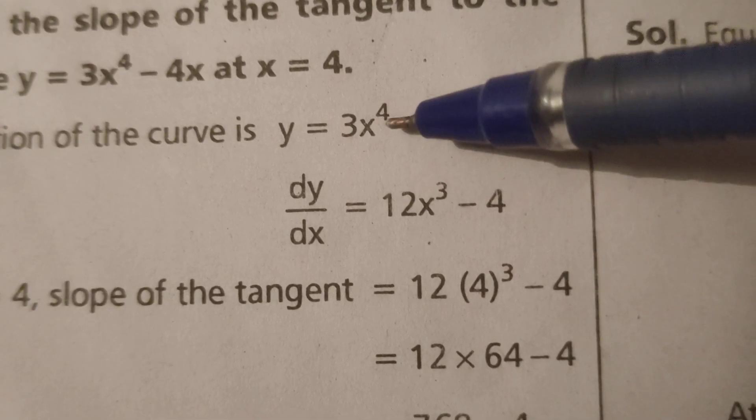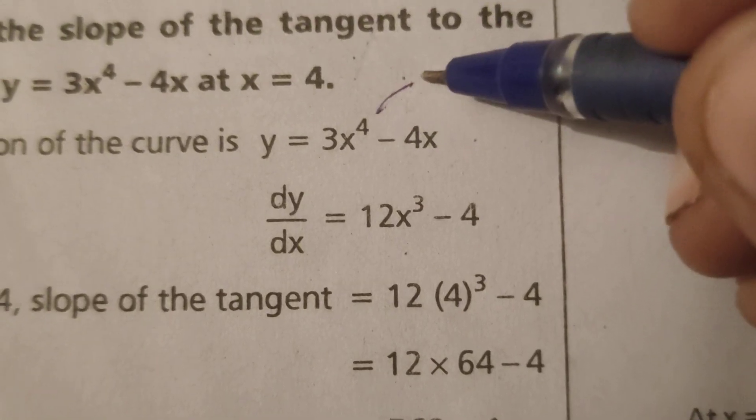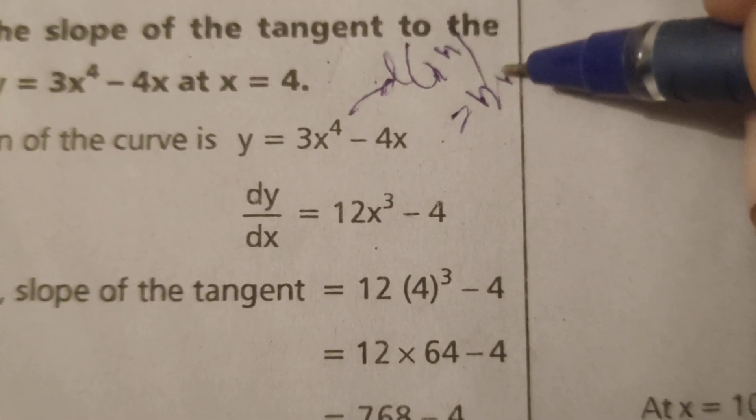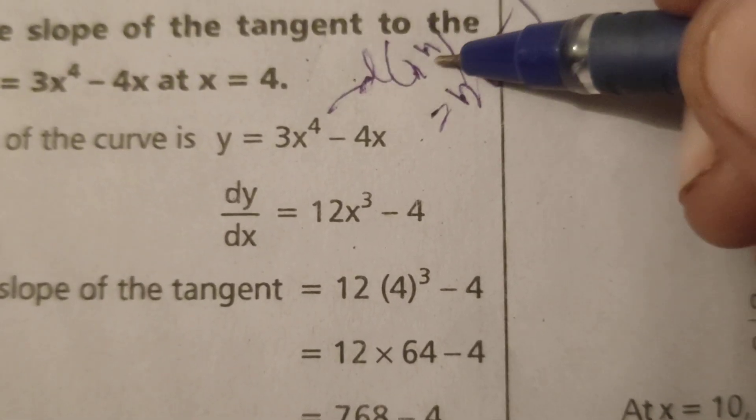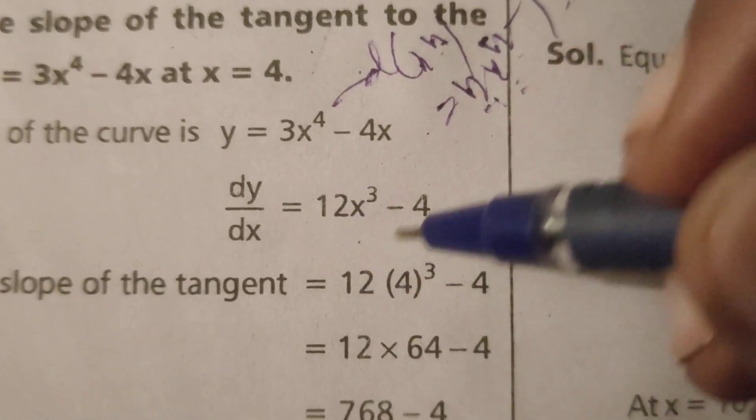Now differentiate this function x to the power 4. Using the formula for differentiation of x to the power n, which is n times x to the power n minus 1. Here n equals 4, so we get 4 times x to the power 4 minus 1.